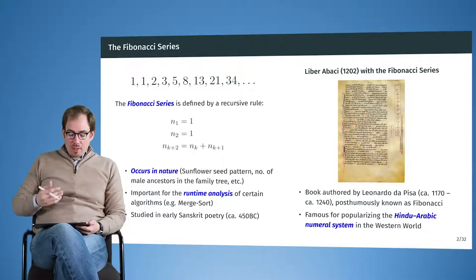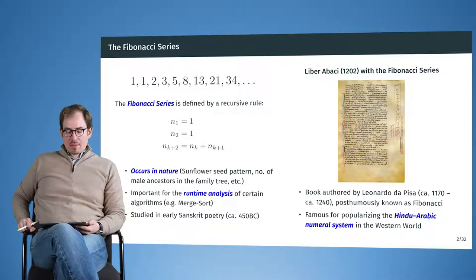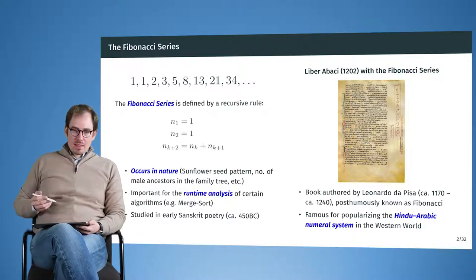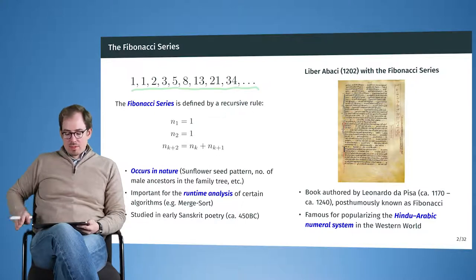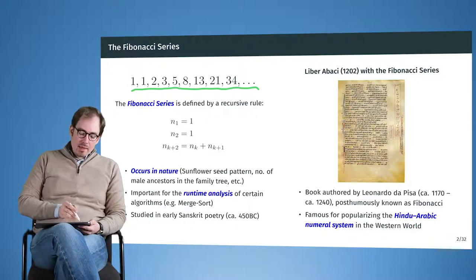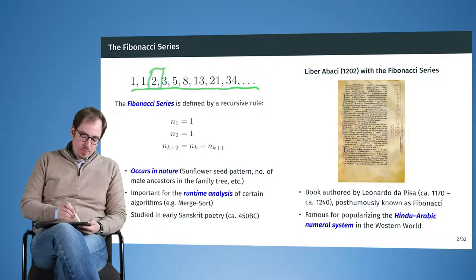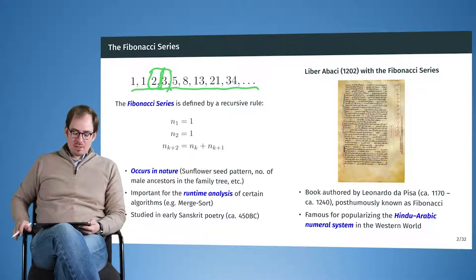To motivate the section on linear algebra, we start with the Fibonacci series. The Fibonacci series is a recursive rule that defines a sequence of numbers: 1, 1, 2, 3, 5, 8, 13, 21, 34. The idea is that you always sum up the two preceding numbers — to get 2 you sum 1 and 1, to get 3 you sum 2 and 1, and so on.